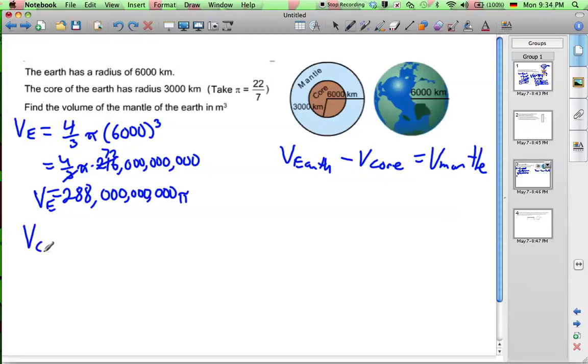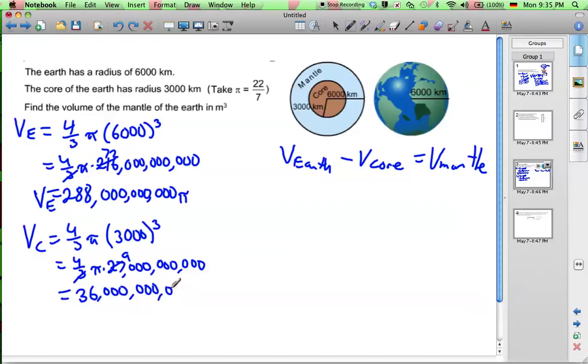The volume of the core is equal to 4 thirds pi times the radius cubed, which is 3,000 cubed. Now 3 cubed is 27. 1,000 cubed is a billion. So that's going to be 27 billion. 27 divided by 3 gives us 9. 9 times 4 is 36. So we're going to have 36 billion pi is the volume of the core.